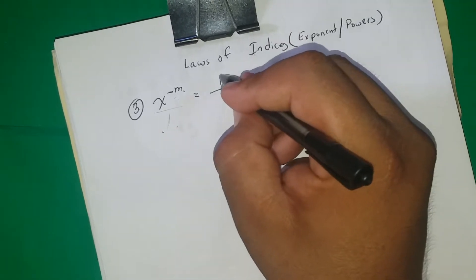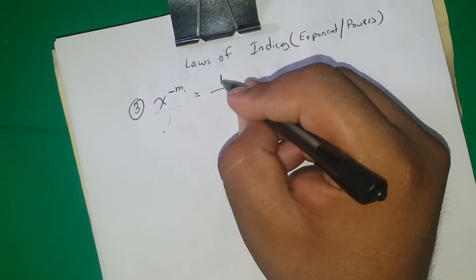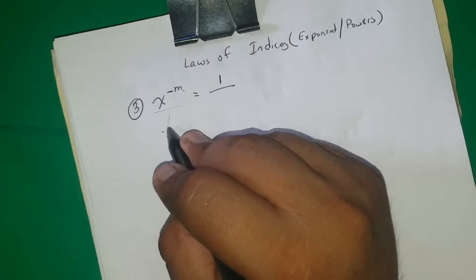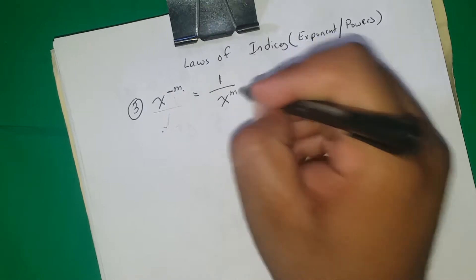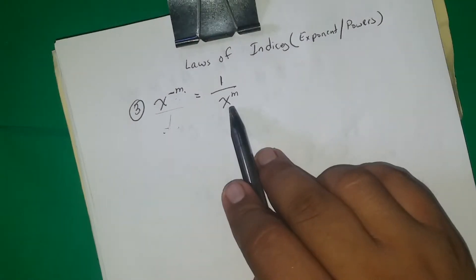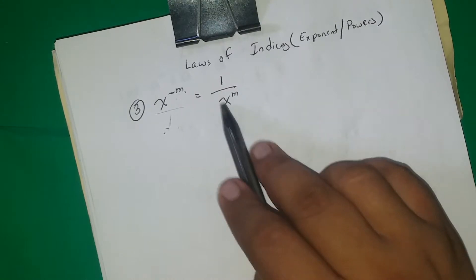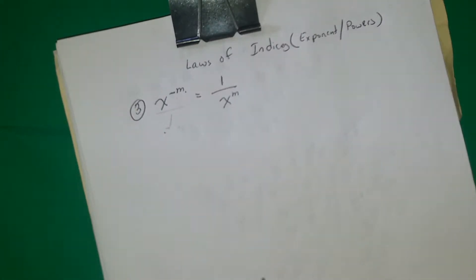When you switch it to the bottom, the one ends up at the top. If you're left with nothing at the top, we just add a one — the same way we added a one before — and then the x becomes x to the m. That is the third law: switch the whole term. If the negative power is in the numerator, switch it to the denominator to make it positive. If the negative power is in the denominator, switch it to the numerator to make it positive.